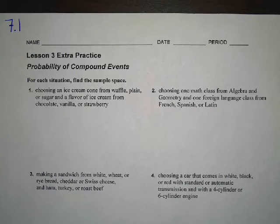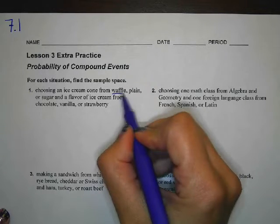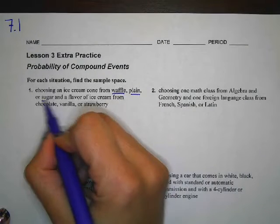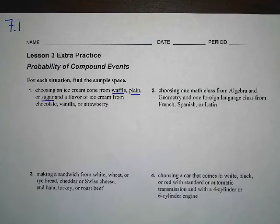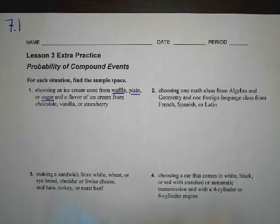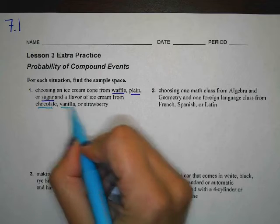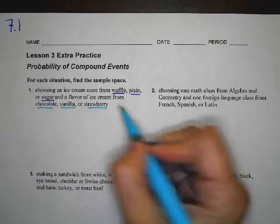For number one, it says choosing an ice cream cone from waffle, plain, or sugar, and then a flavor of ice cream from chocolate, vanilla, or strawberry.